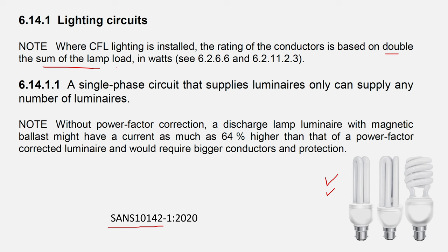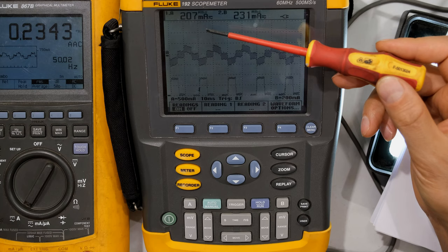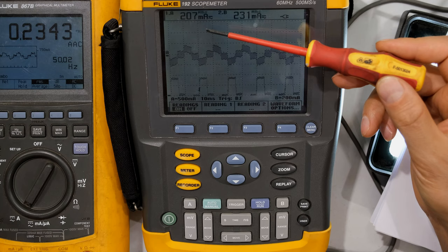According to the SANS 10142 standard, we actually double the sum of the lamp load in watts for compact fluorescent lighting. For example, if you're using 20-watt compact fluorescent lamps, you count each globe at double the wattage in order to specify the correct wire size. Remember that the circuit breaker must always be able to protect the wiring. If you'd like to see how I measure the inrush current, the link is in the description below and in my playlist on electrical tutorials.